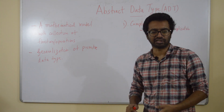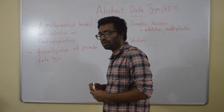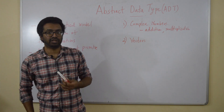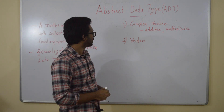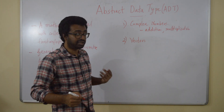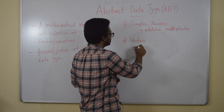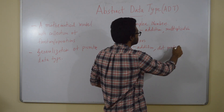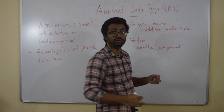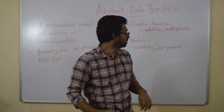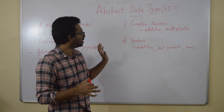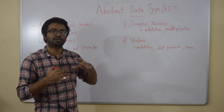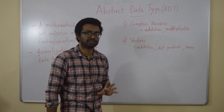Let's look at another example: vectors. What are the operations you can associate with vectors? Again, addition, dot product, norms — these can be functions associated with vectors.